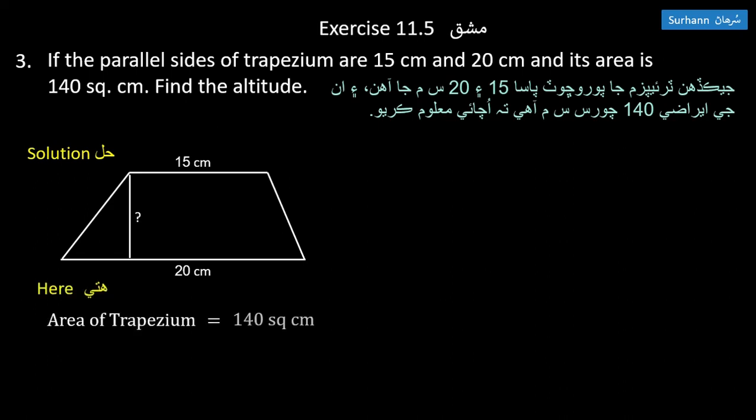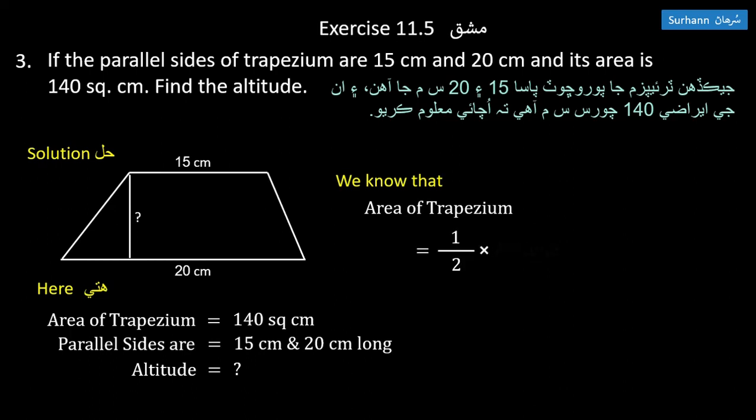Parallel sides are 15 and 20. We need to find the altitude. Using the area formula: 140 equals one-half times altitude times (15 + 20). So 140 equals one-half times altitude times 35.